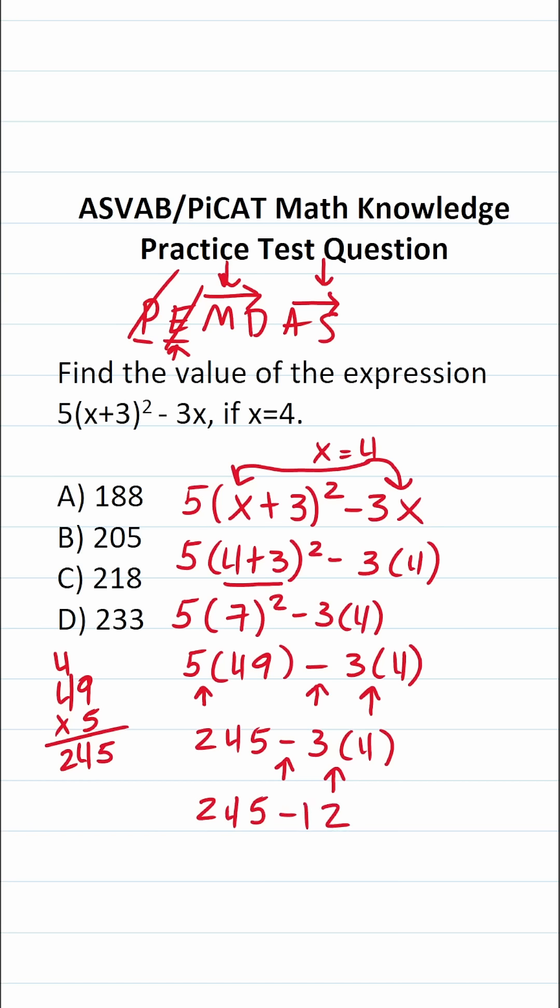We only have one operation left so let's go ahead and take care of that. 245 minus 12 is 5 minus 2 is 3, 4 minus 1 is 3, 2 minus nothing is 2. So the result we get when we evaluate this expression when x equals 4 is going to be D, 233.